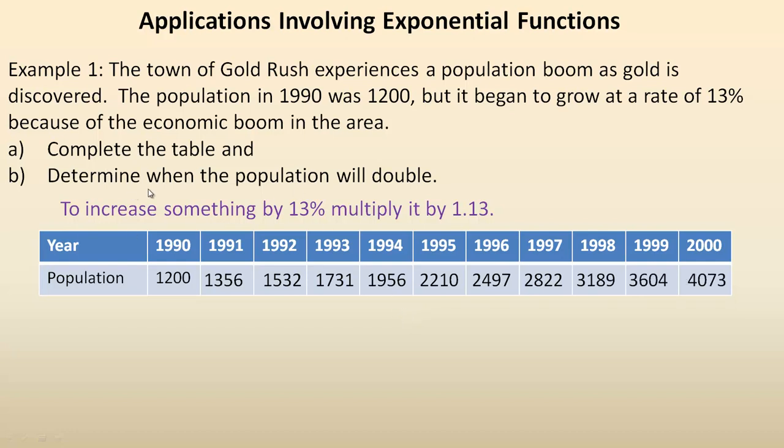In part B it says determine when the population will double. Well it started at 1200, so double would be 2400. So it takes about 6 years. This is just past double, so it takes just under 6 years.